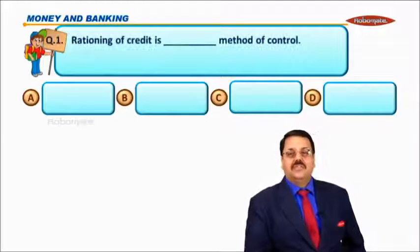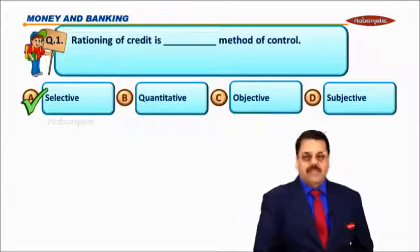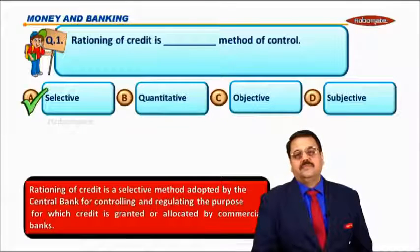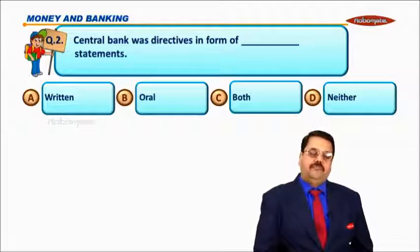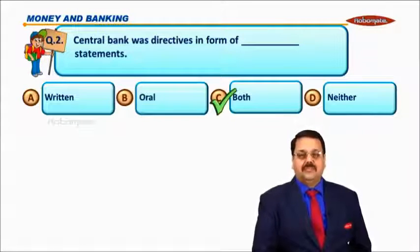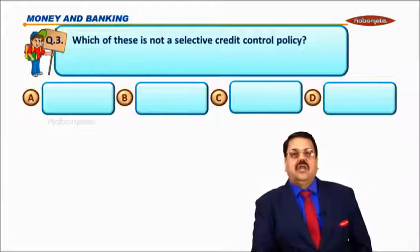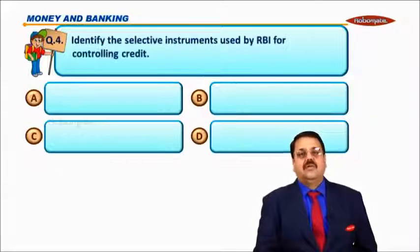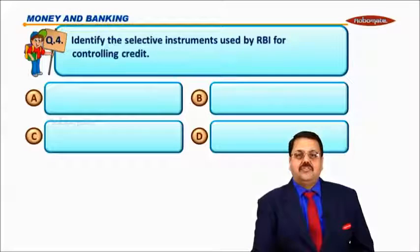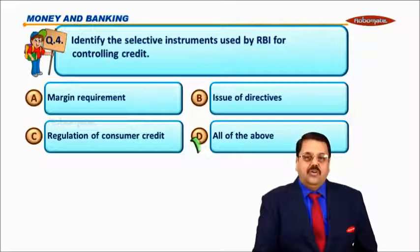MCQs: First — rationing of credit is a selective method. Second — the central bank issues directives in the form of oral as well as written — both. Third — which of these is not a selective credit control policy? Bank rate. Fourth — identify the selective instrument used by RBI for controlling credit — all of the above.